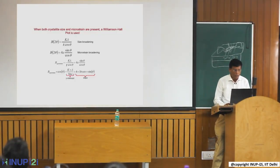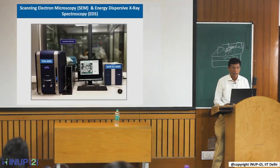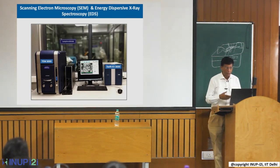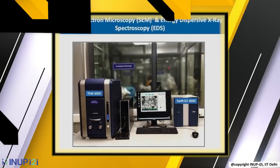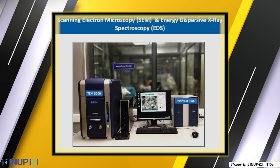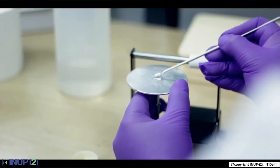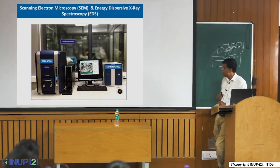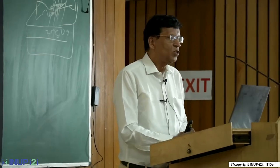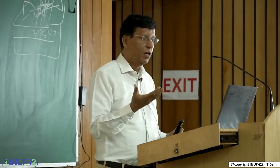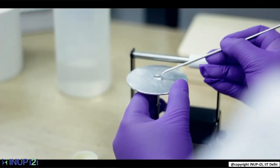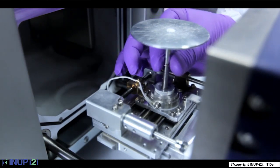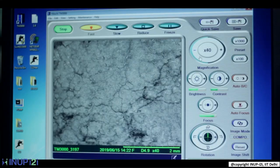Now I will quickly tell you about SEM. This is the scanning electron microscope we have here in NRF — a table-top model. Tomorrow when you visit you will see it. The scanning electron microscope is used to see the surface topography. If you prepare a film and want to see the shape and size of the material, you can get very quick information using SEM.